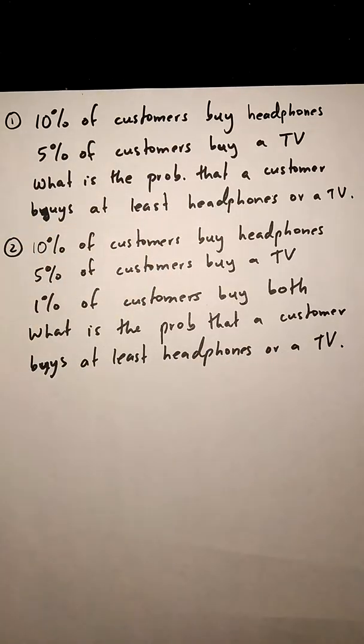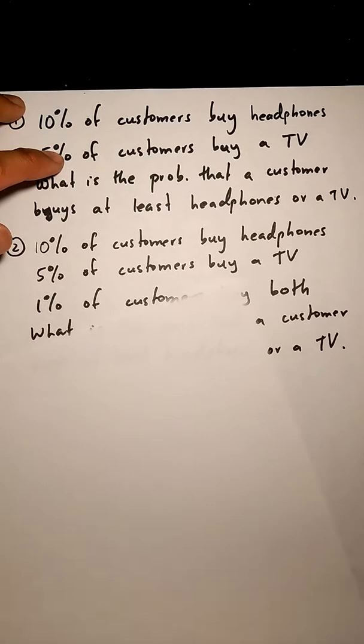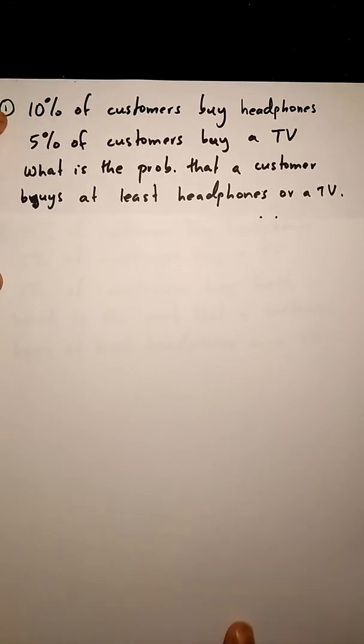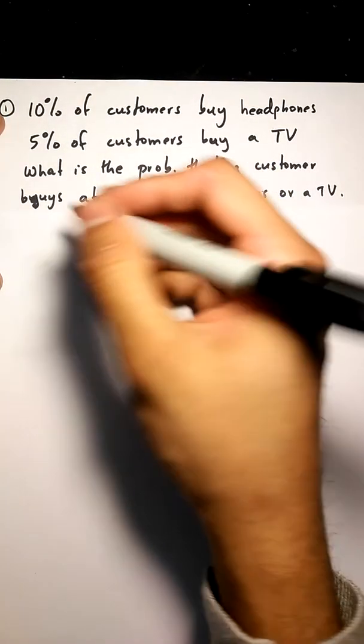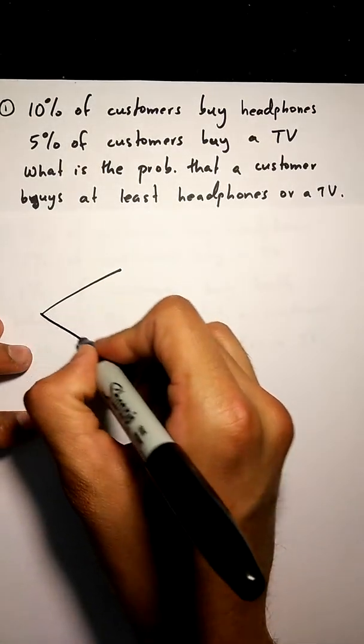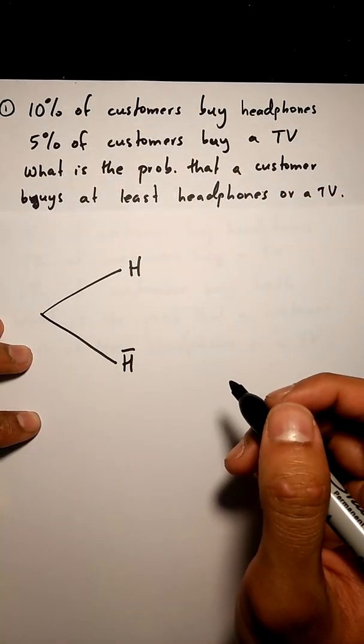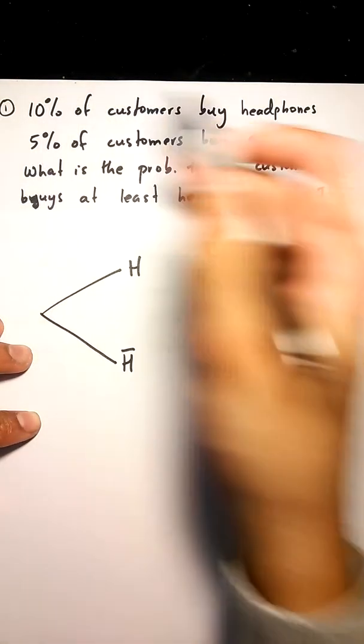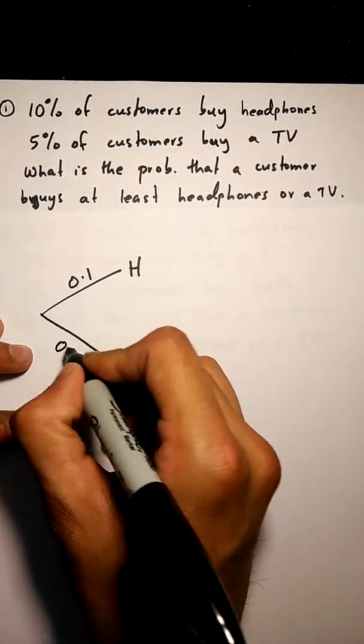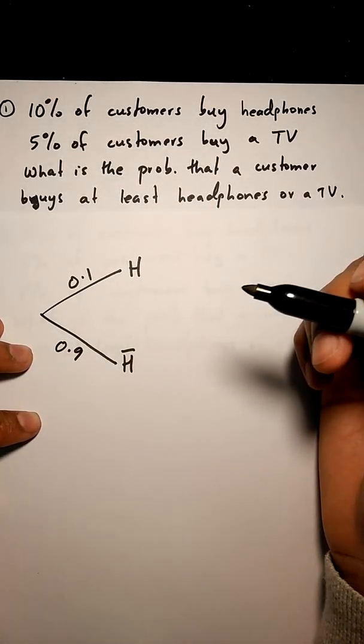Okay, so in our first case with the tree diagram, we can have a customer that buys headphones or does not buy headphones. You know that 10% of customers buy headphones, that's 0.1, which makes this 0.9. They have to add up to 1. 90% of customers don't buy headphones. Then we have TV or no TV, TV or no TV.